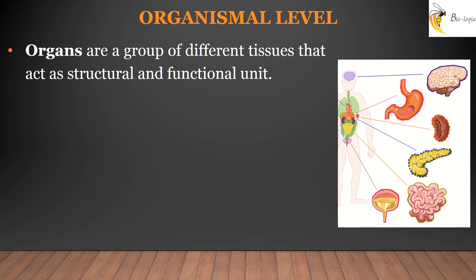Correspondingly, when two or more tissues come together, they form an organ. In the case of plants, flowers and stems are organs, and in animals, heart, liver, kidney, etc. are termed as organs.